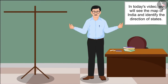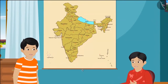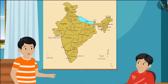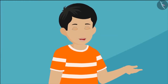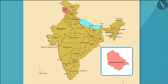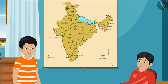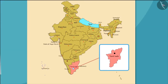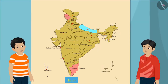In today's video we will see the map of India and identify the direction of states. Here are Raju and Govind who hail from Madhya Pradesh. Both of them are very excited about their school holidays. In these holidays, I am going to Jammu and Kashmir with my parents. And I am going to Tamil Nadu with my family. Look at this map carefully — Tamil Nadu is a southern state of India, and this is Jammu and Kashmir.